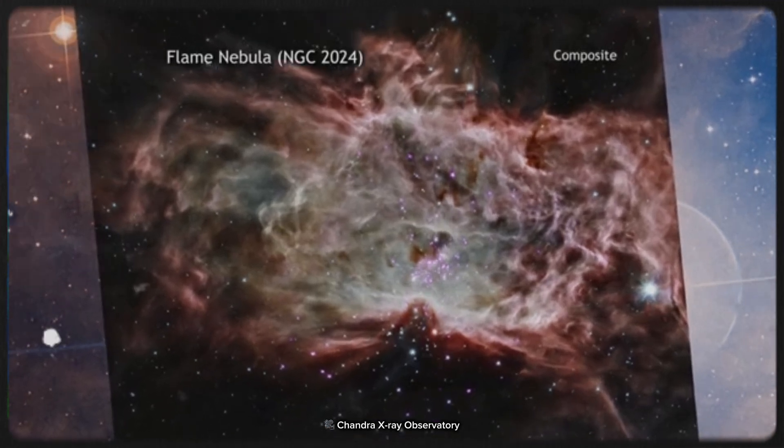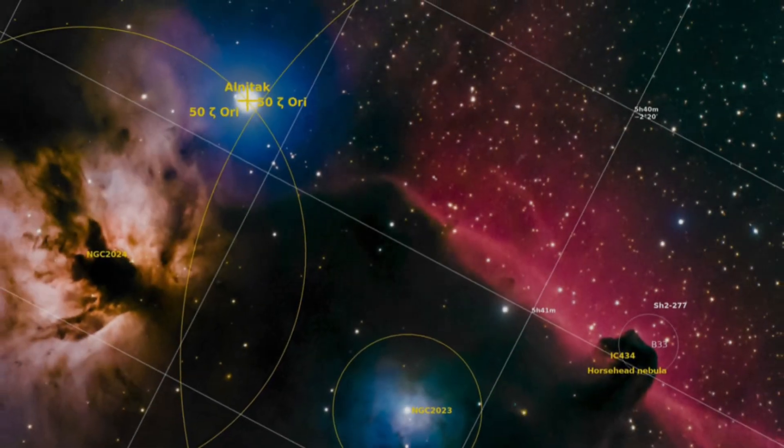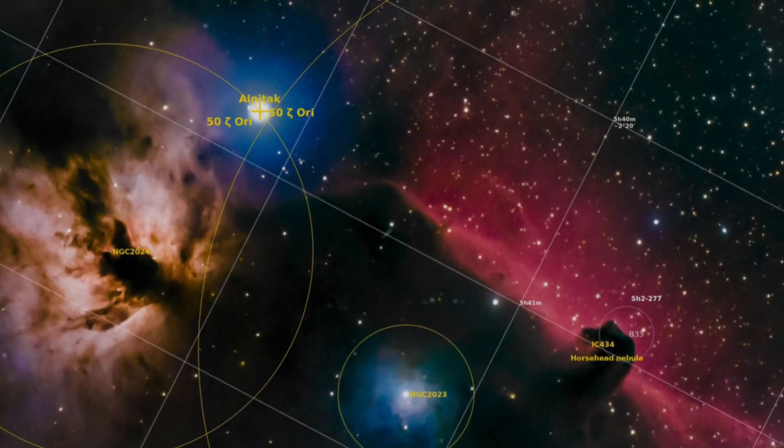Hubble couldn't quite detect the faintest of these objects on its own, but it helped chart the path. Its data pointed researchers to the right places, showing them where to look more closely.